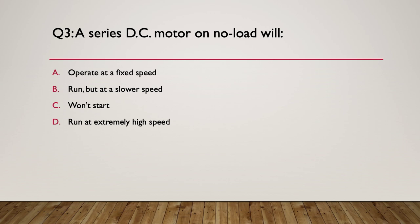Question three: a series DC motor on no load will do what? A: operate at a fixed speed. B: run but at a lower than normal speed. C: won't start at all. Or D: will run at an extremely high speed. Pause here. Here's your hint — what is the special speed characteristic of a series motor? Again, visualize the curve of the speed characteristic of a series motor.